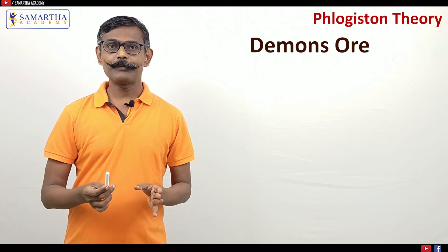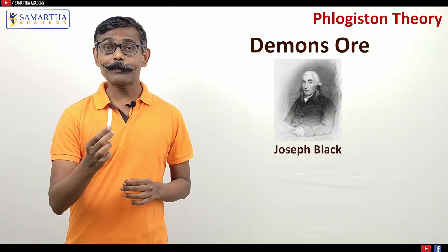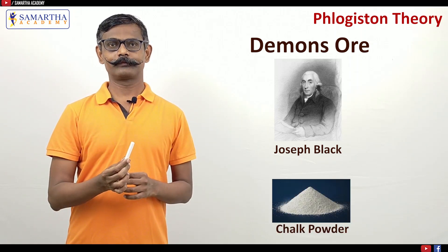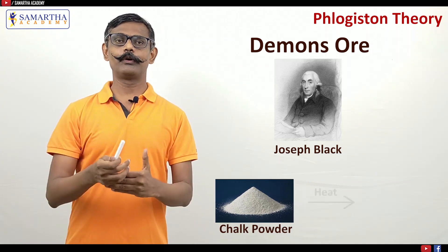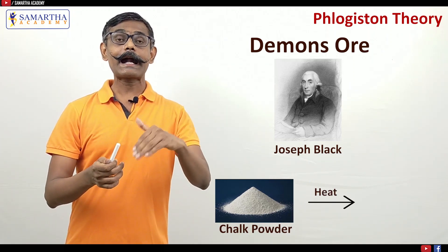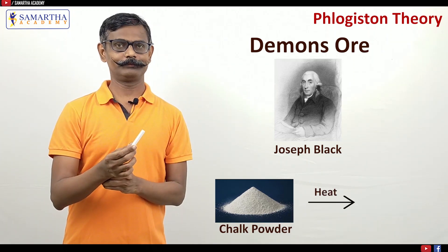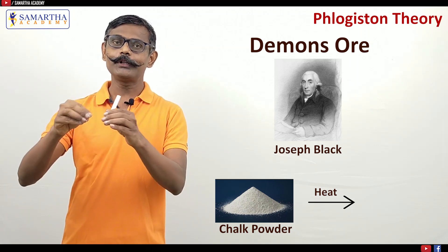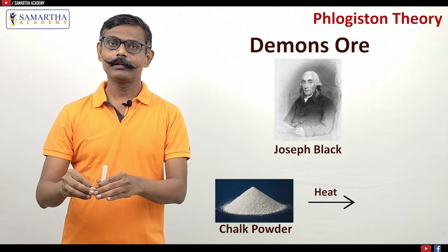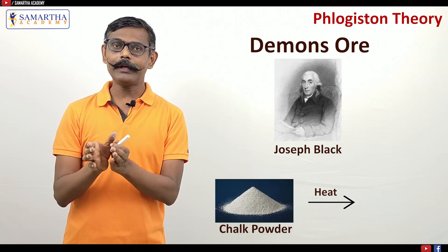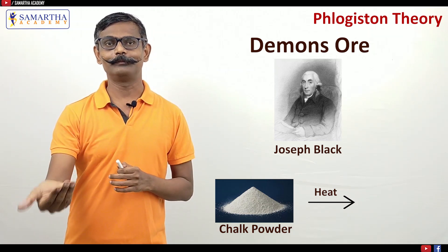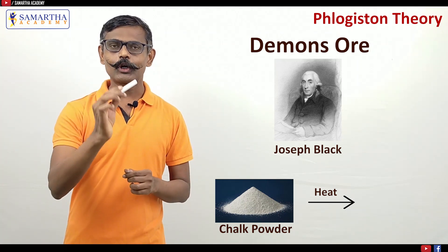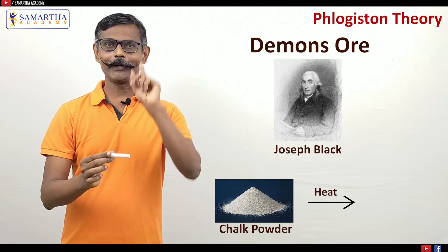Third interesting example. Scottish chemist Joseph Black, when he took chalk powder and heated the chalk powder, he found quicklime from that chalk powder. And the quicklime, when it was put in water and kept in the open air, again chalk powder was formed. He noted during heating the chalk powder, some gas went out.